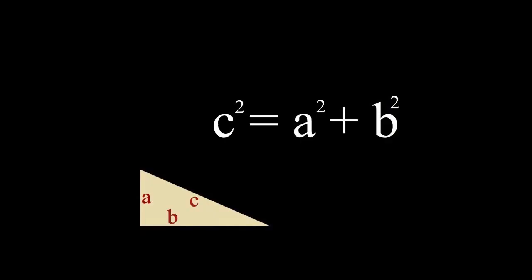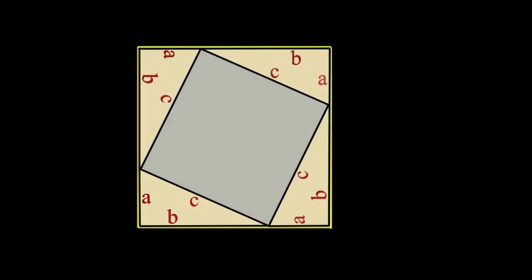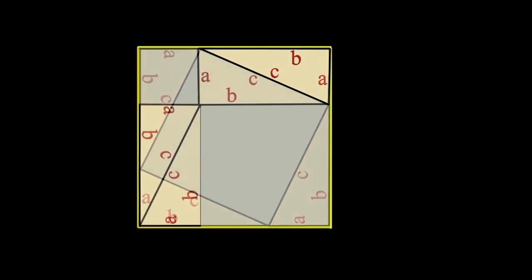Here are a couple of clues. Pythagoras started by arranging four identical right-angled triangles to create this configuration. The sides of the triangles are labeled A, B, and C. He then rearranged the triangles to create this configuration.